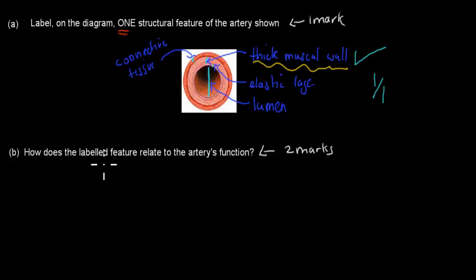And then B says, how does the labeled feature relate to the artery's function? Now again, you've got to talk about the part you actually chose. So in this case, the thick muscular wall. Think about the role it has. So what role do these arteries have? What kind of environment do they live in? What kind of things do they have to be able to do? The actual artery, the role and the environment. So you have to think about that for your answer.